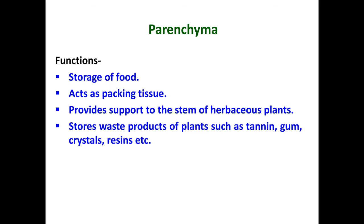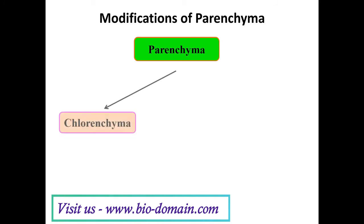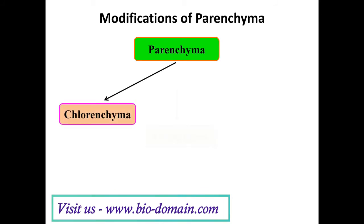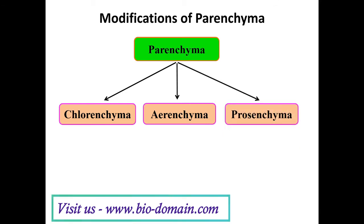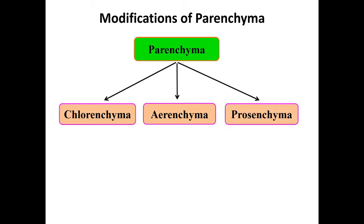Parenchyma is generally found in three modified forms. The first modified form is known as chlorenchyma, the second is aerenchyma, and the third is prosenchyma. Chlorenchyma is the type of parenchymatous tissue which has chloroplasts, and thus photosynthesis takes place in this tissue.